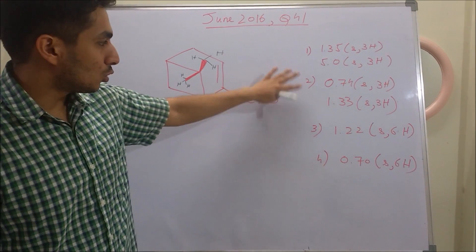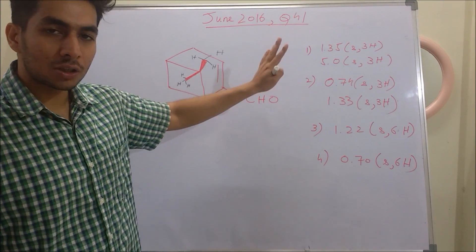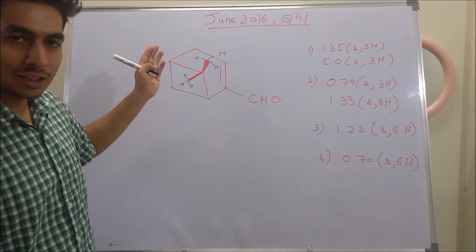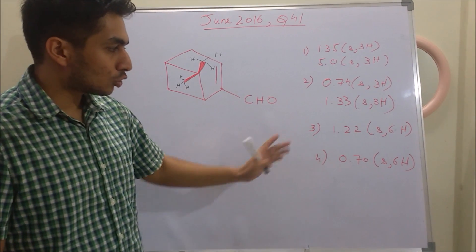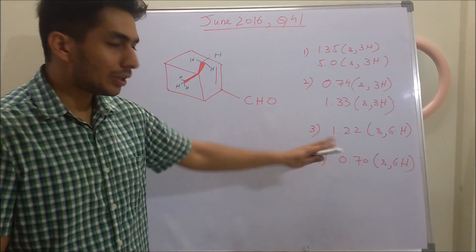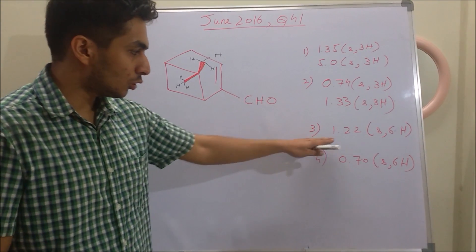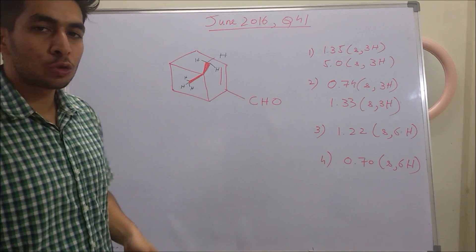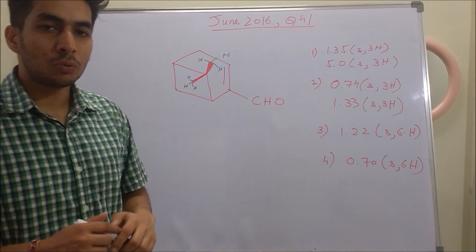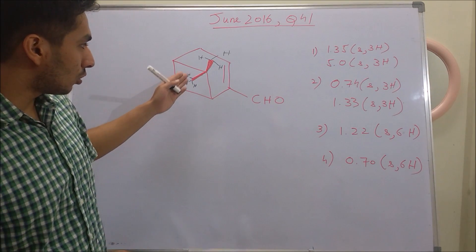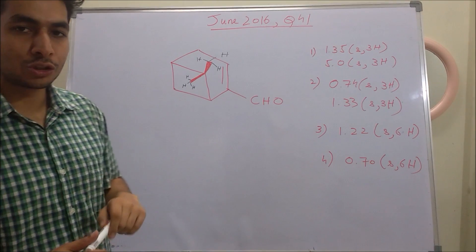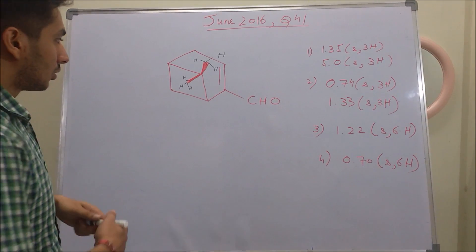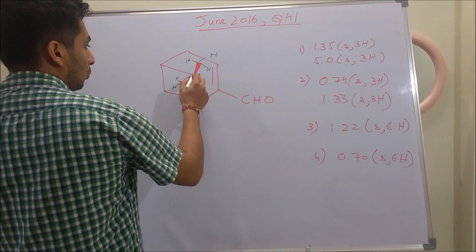If you look at the four given options, in two of the options we are getting two different kinds of chemical shifts, meaning these protons give a different chemical shift from these other protons. In the third and fourth options, you see only one chemical shift value, meaning these three protons and these three protons are considered equivalent. So first we have to determine whether these methyl protons are in the same environment or not, and for that we need to check the chirality.